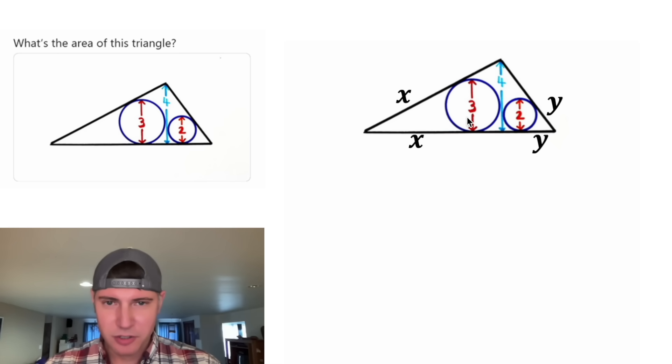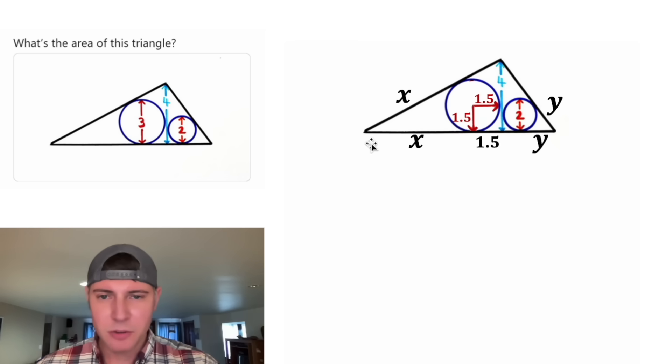The diameter of this circle is equal to three, which means if we drew a radius, it would be equal to 1.5. And this radius as well would be 1.5. If this horizontal radius is 1.5, that means the distance from this tangent point to here would be 1.5. So this portion is X and this is 1.5. And then we still don't know this yet. And this is Y.